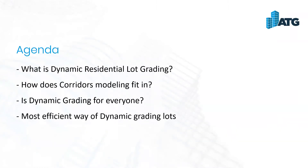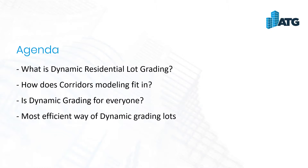Our agenda today: there are many ways of doing residential lot grading. This workflow has worked for me since release 2019 when we were able to utilize feature lines and corridors as baselines, which really made things more efficient. What is dynamic residential lot grading? To me, it's the process of utilizing a corridor to do things a corridor wouldn't normally be thought of doing. By 'dynamic,' I mean around 80% dynamic — when you make changes, you will have to come in and rerun the corridor.